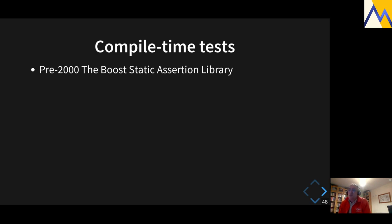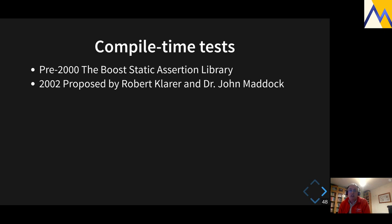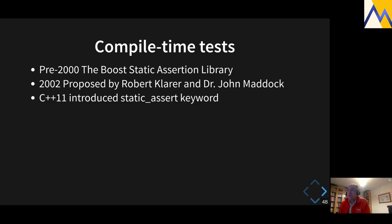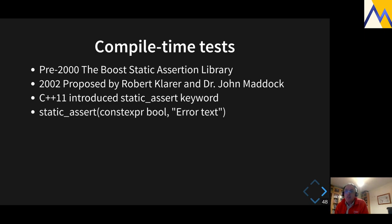Sometimes you want compile-time tests using static_assert. This came out of Boost's static assertion library — it was pre-2000 and proposed by Robert Clare and Dr. John Maddock, one of the first things to go into the C++11 standard. You give static_assert a Boolean constant expression as the first argument, and optional error text that appears if the Boolean is false. In C++17 the error text was made optional because people were often repeating the expression as the text.